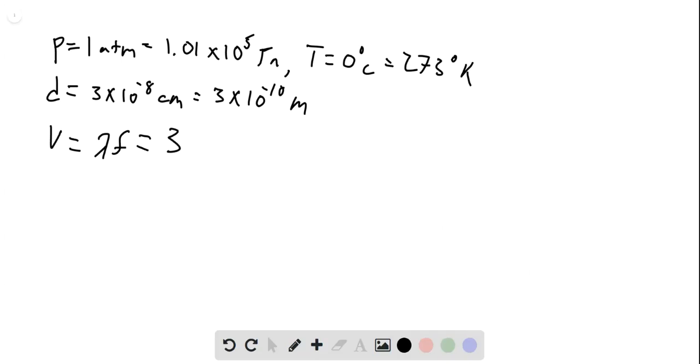So the mean free path length is 1 over √(2π d² N/V).